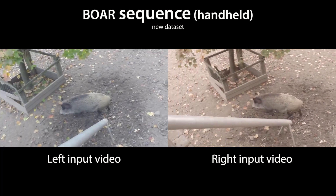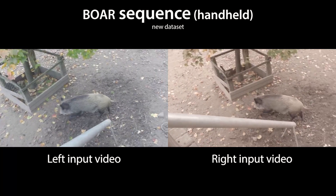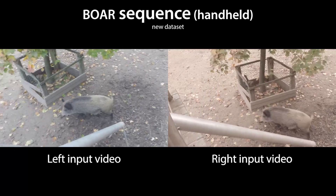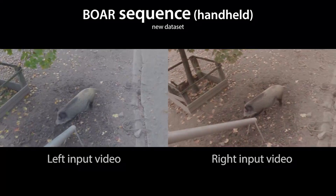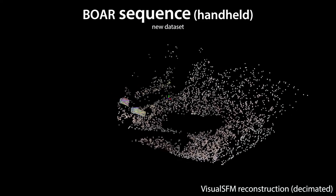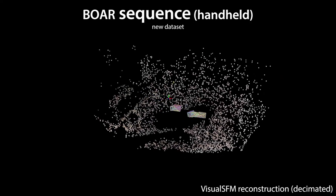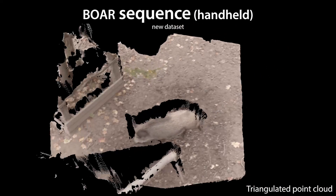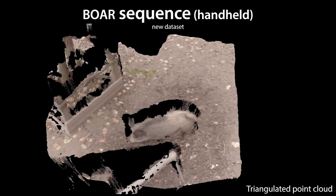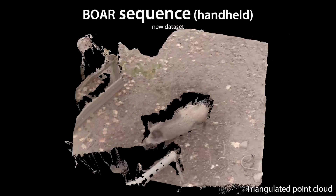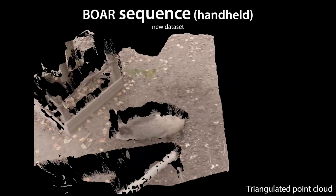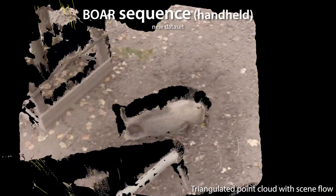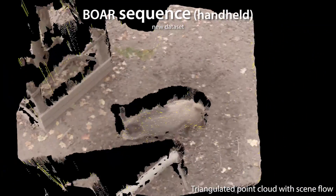This is another handheld dataset with strongly different visual appearances. We use Visual SFM for calibrating the input videos extrinsically, but we do not use the reconstructed 3D points. This is the reconstructed geometry from the two handheld videos; one can clearly see the effect of the moving camera viewpoints. The scene flow vectors again faithfully follow the motion of the animal.